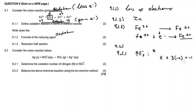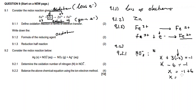Setting up the equation: x + 3(−2) = −1, so x − 6 = −1, therefore x = −1 + 6 = +5. The oxidation number of nitrogen in the nitrate ion is +5.